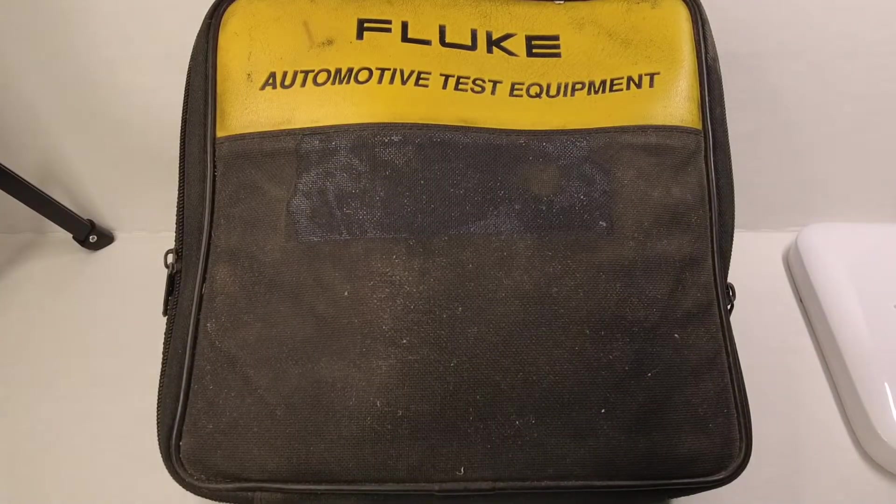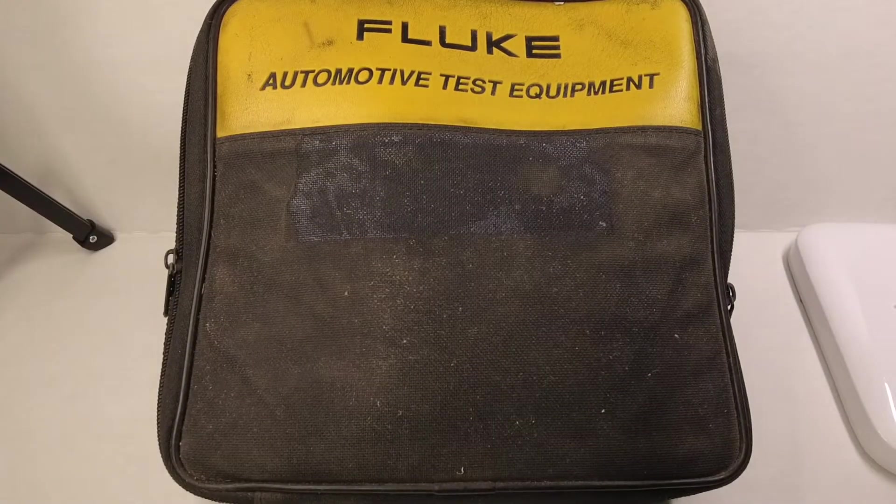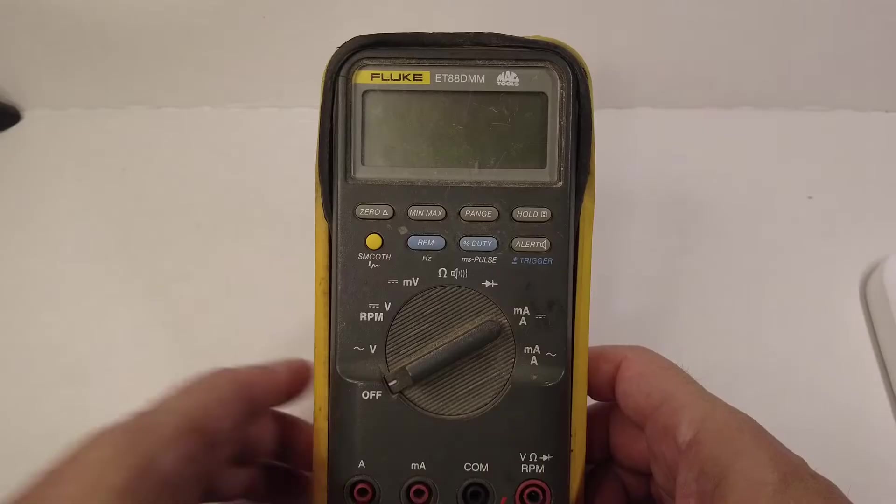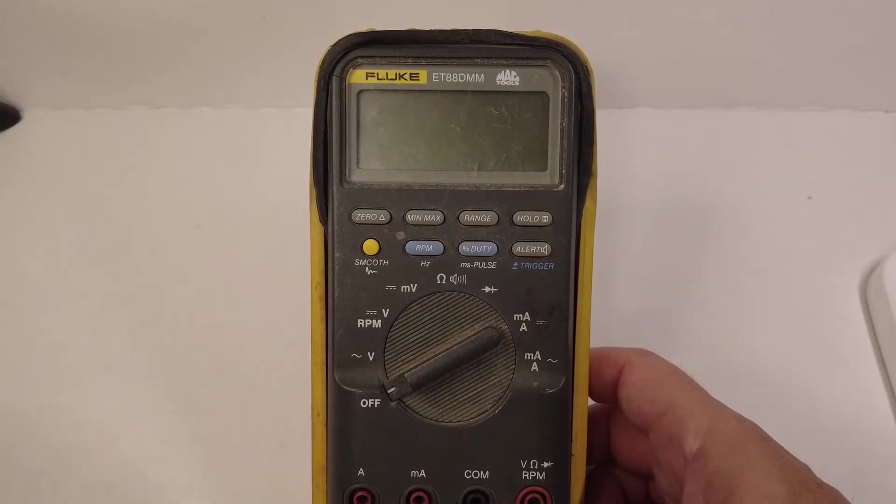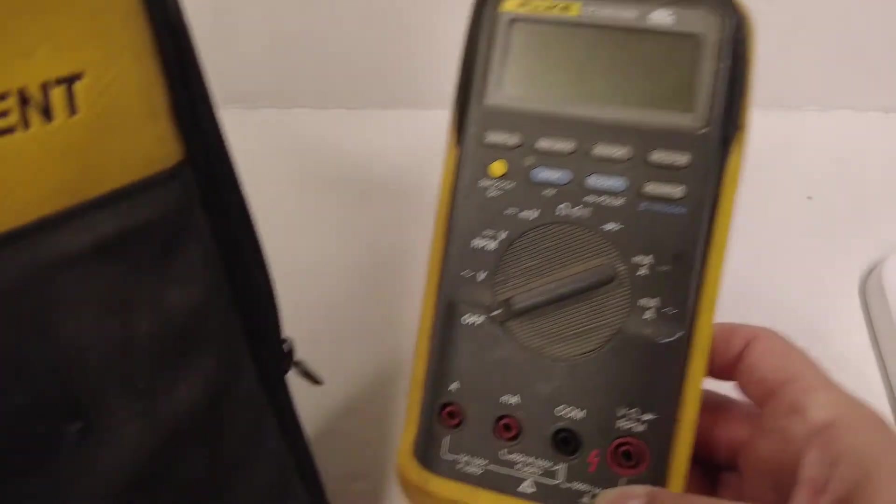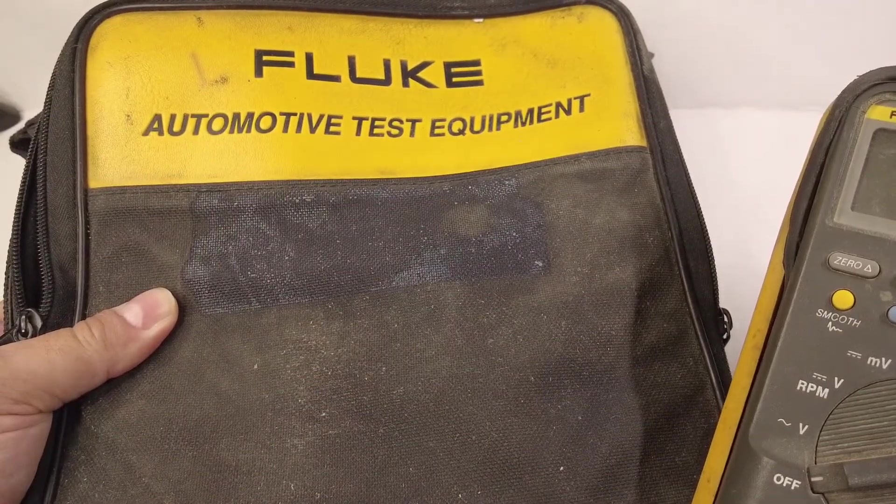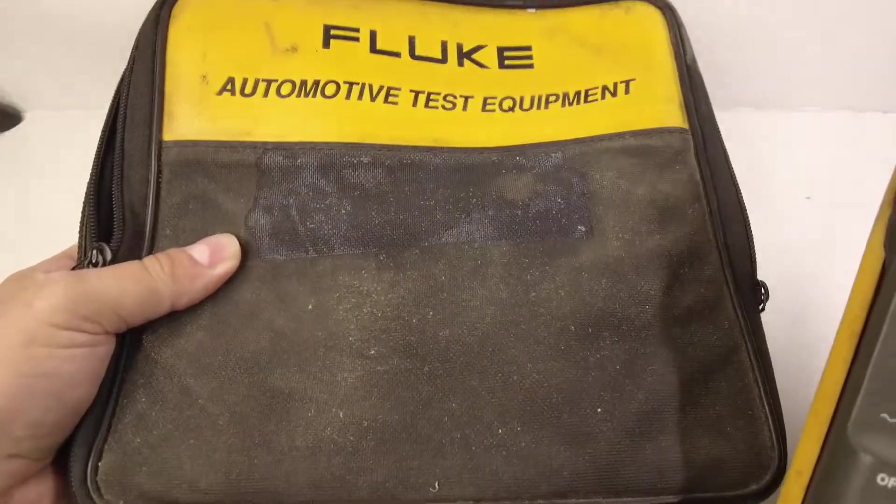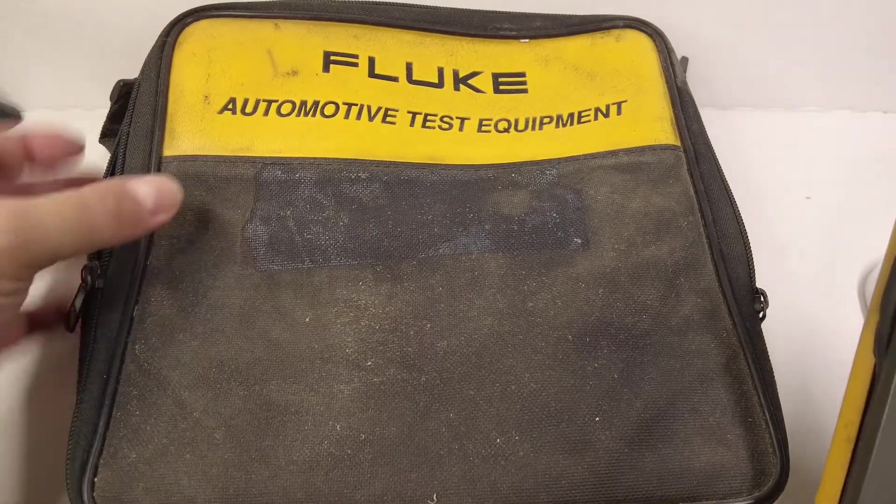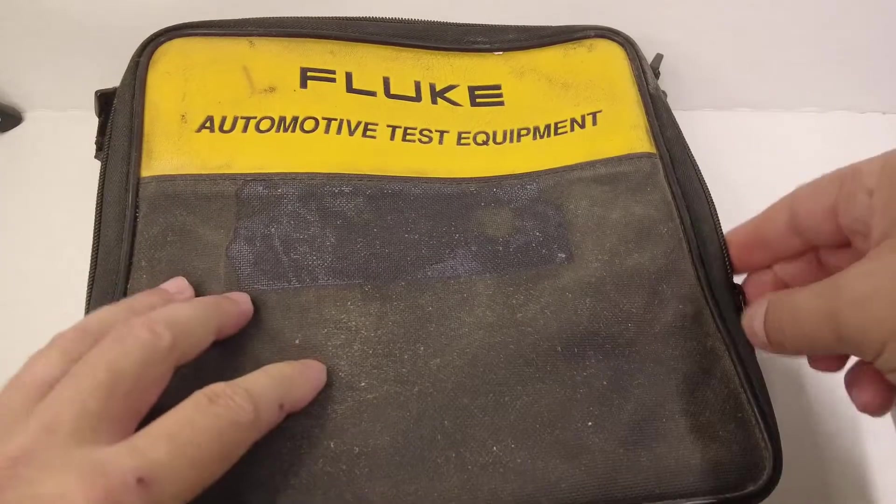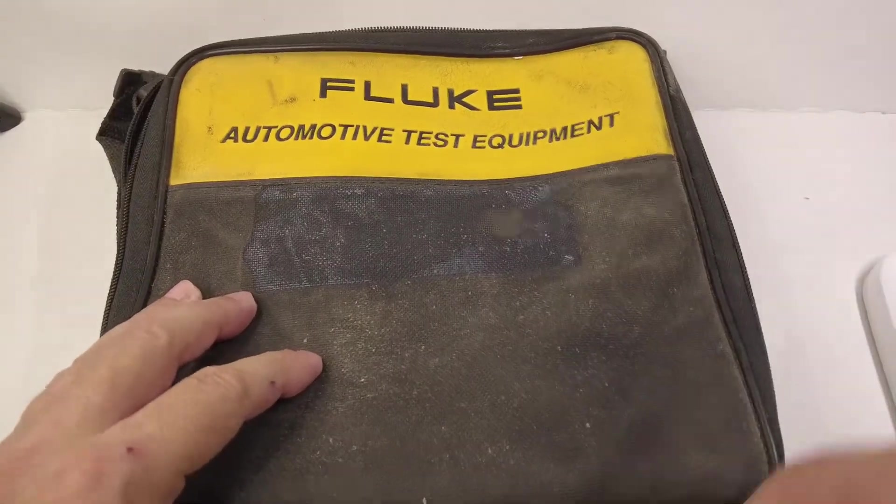But there's a special surprise in here because it's not just a Fluke 88. Let's open it up and take a look. It's a Fluke Automotive Test Equipment bag here. And we all know that the Fluke 88 Multimeters accompany bags like this. If you're rolling with the full kit, you've got this bag and all of the accessories that go along with it.